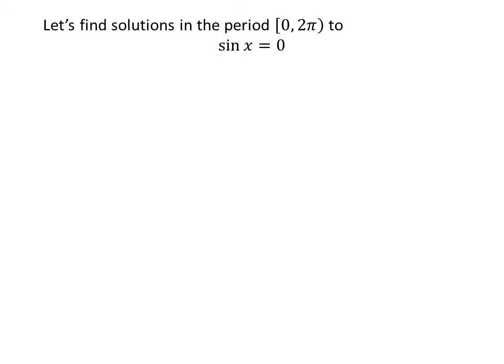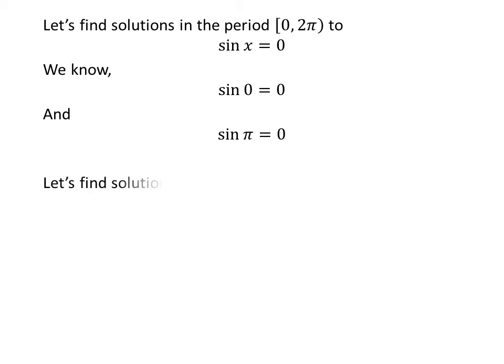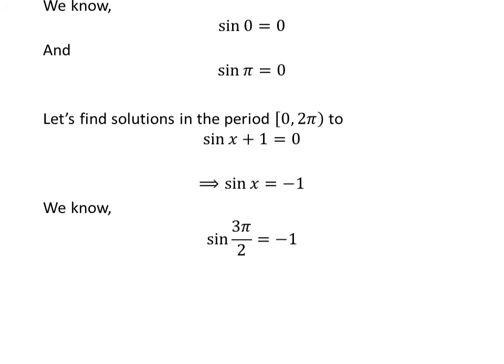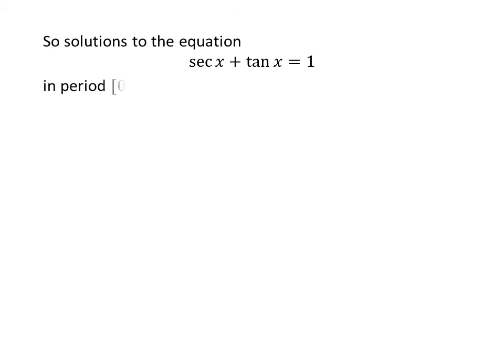First, we find the solutions to sine of x is equal to 0. We know sine of 0 is equal to 0, and sine of pi is also equal to 0. Next, we find solutions to sine of x plus 1 is equal to 0, which gives sine of x is equal to minus 1. We know the value of sine of 3 times pi upon 2 is minus 1. So the solutions to the equation secant of x plus tangent of x is equal to 1 in the interval 0 to 2 times pi are: 0, pi, and 3 times pi upon 2.